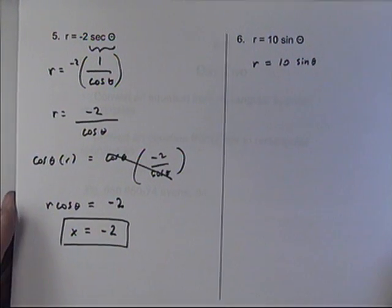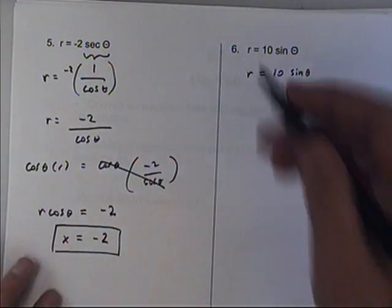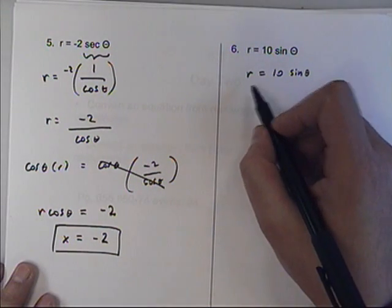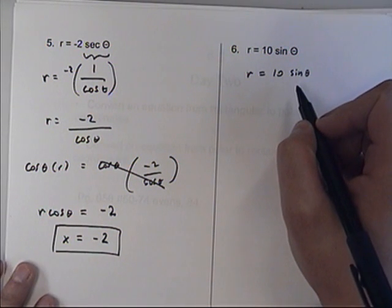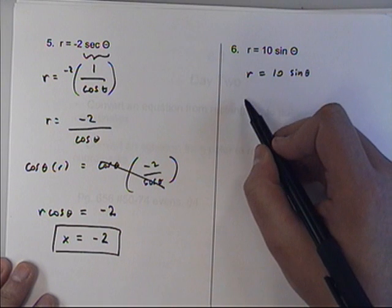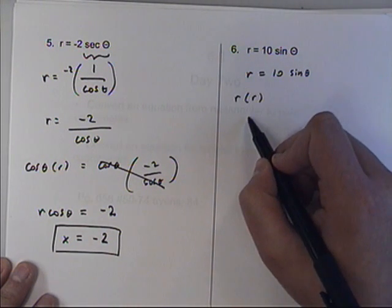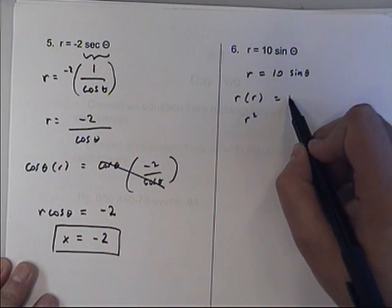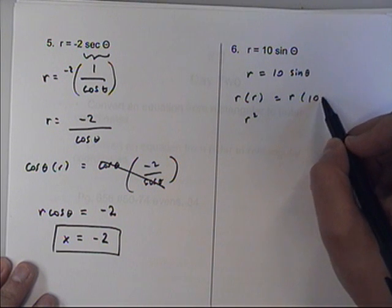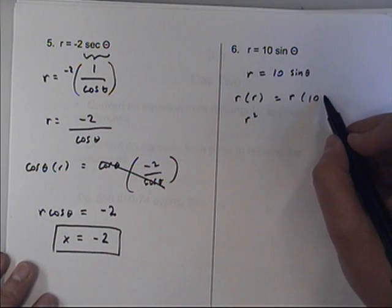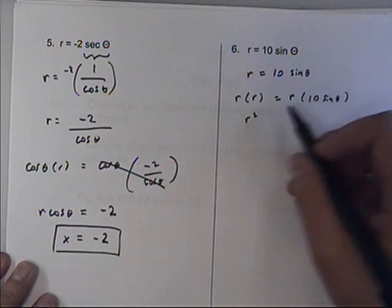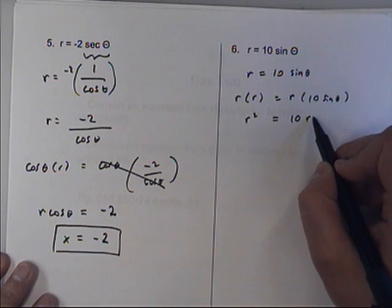So in this case, there's a little trick that you can use. I'm going to multiply both sides by r. Okay? So if I multiply this side by r, I get r squared. If I multiply this side by r, I'm just going to kind of put the r in between the 10 and the sine theta.